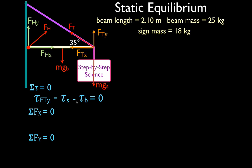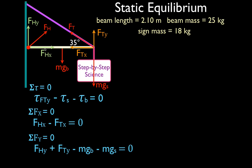For the x direction, there are only two forces: FHX pointing in the positive direction and FTX in the negative direction, so we write FHX minus FTX equals zero — they're equal in magnitude but opposite in direction. For the y direction, there are four forces: FHY and FTY point in the positive direction, while the weight of the beam (MgB) and the weight of the sign act in the negative direction. Don't forget any of the forces.